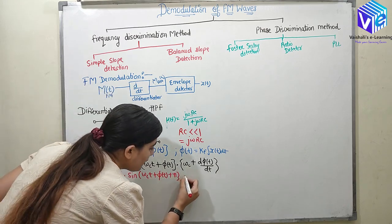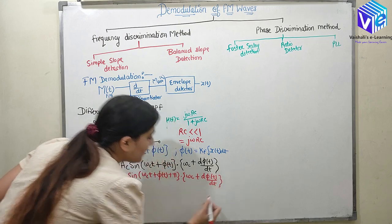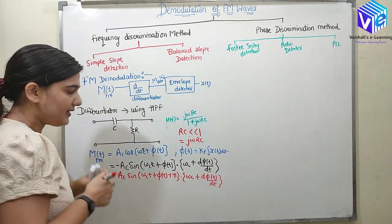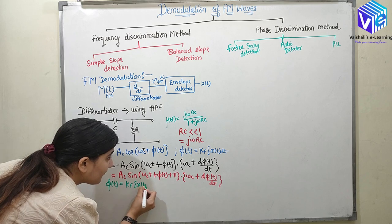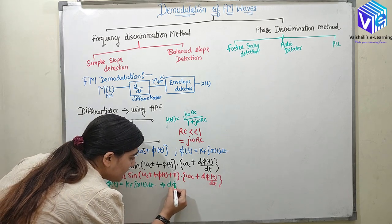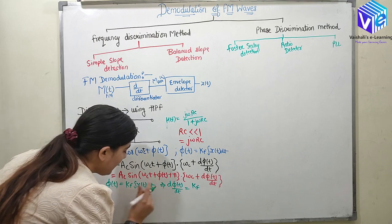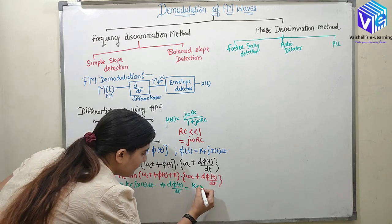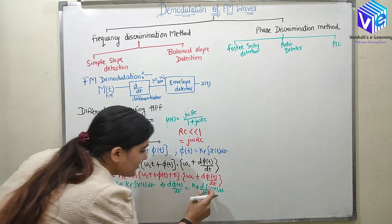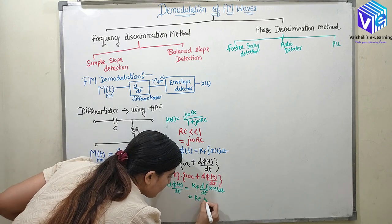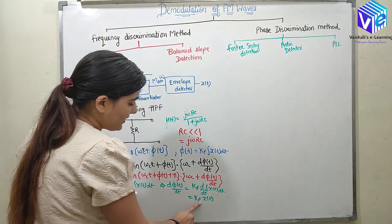Substituting dφ/dt = KF·X(t) into the differentiated signal, we get: d/dt of M(t) = AC·(ωC + KF·X(t))·sin(ωC·t + φ(t) + π). The differentiation of φ(t) is KF·X(t), and now we will put this value in and observe the resulting signal.